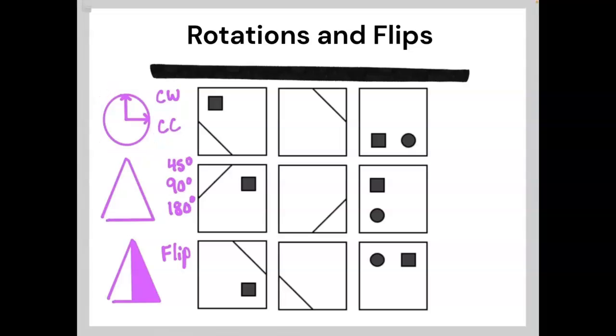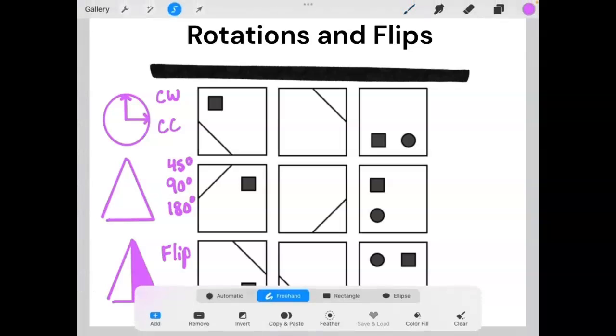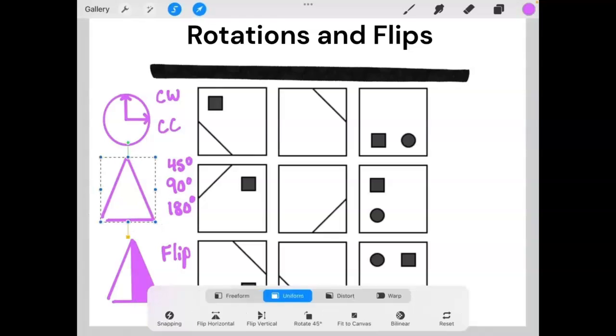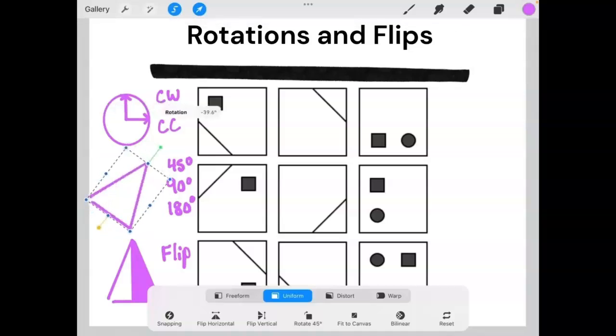Rotations can also be done in different degrees. So if I were to take this triangle, the three most common rotations are 45 degrees, which looks like that. 90 degrees, which looks like this. And 180 degrees, which looks like this.